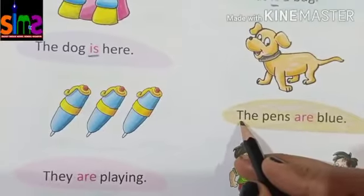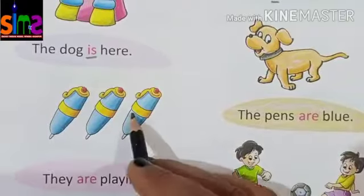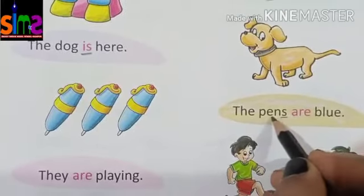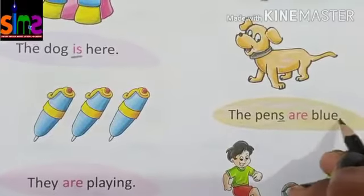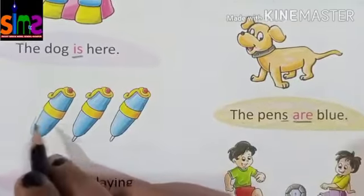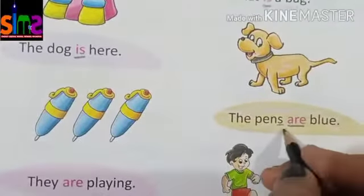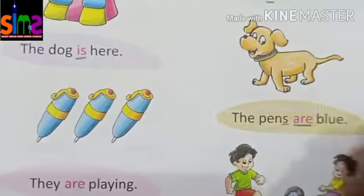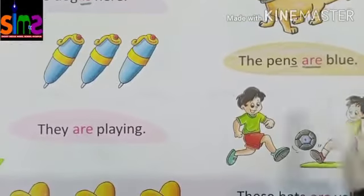Let's read this sentence: 'The pants A-R-E B-L-U-E, blue.' Look here kids — they have written 'are' because the pants are more than one. 'The pants are blue.' The word 'are' is used for many things.